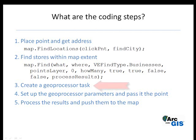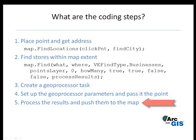There are three additional steps: creating the geoprocessor task, setting up the geoprocessor parameters and passing the point dynamically, and finally processing those results and pushing them to the map.